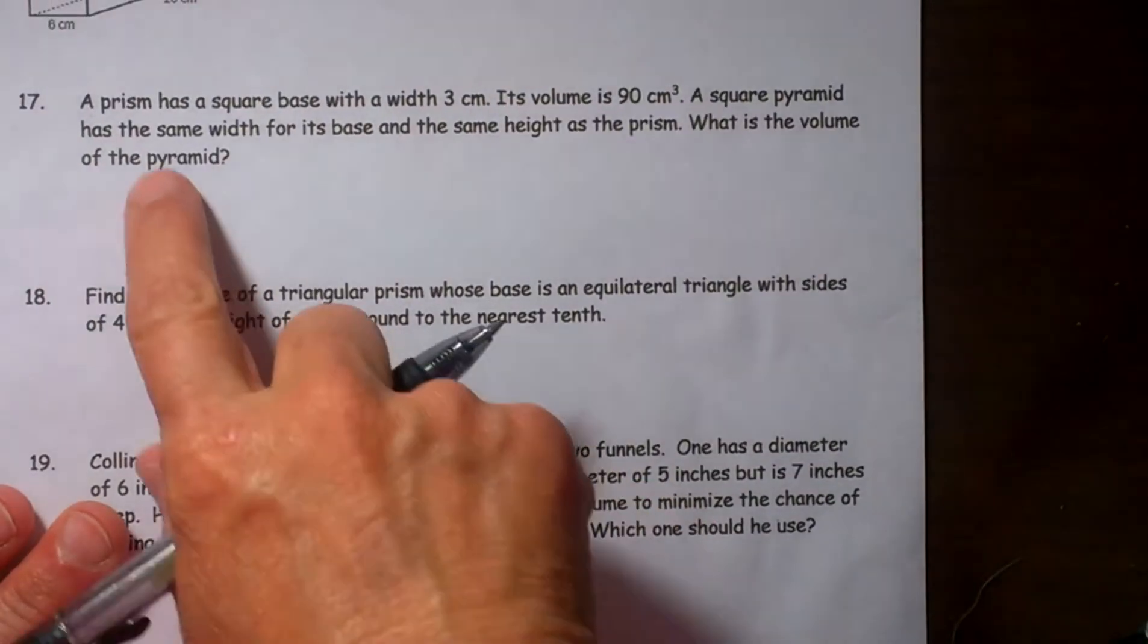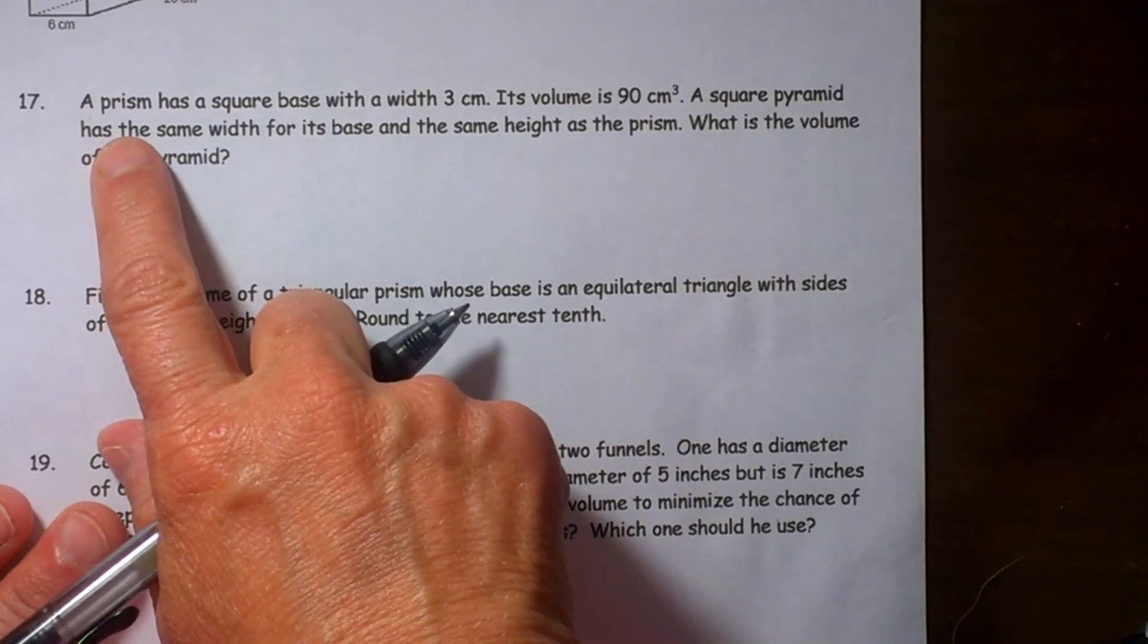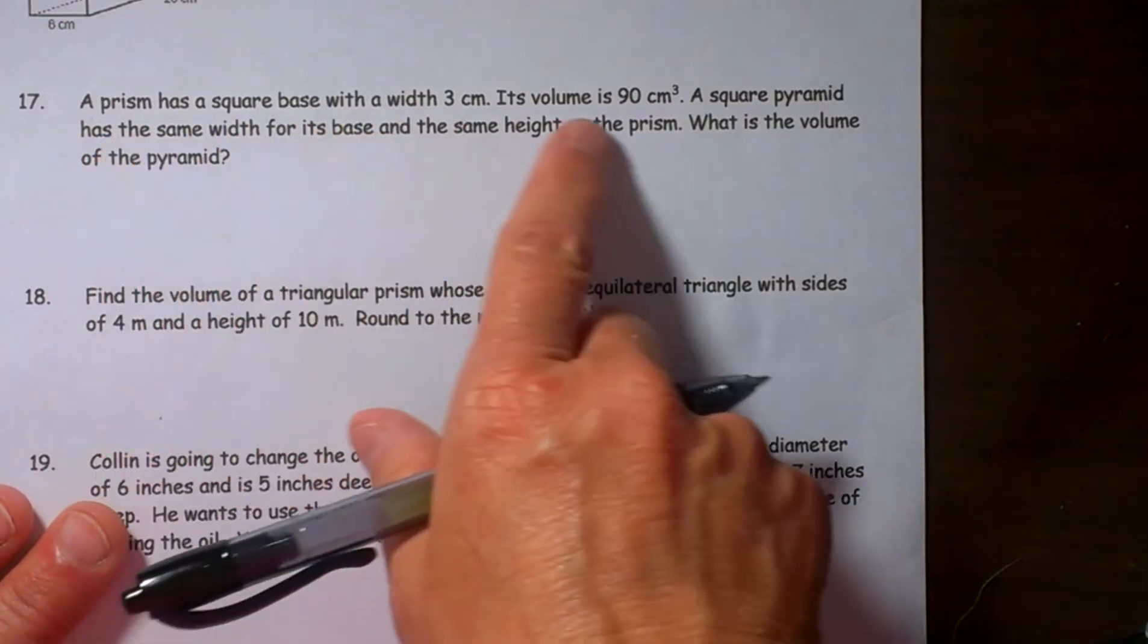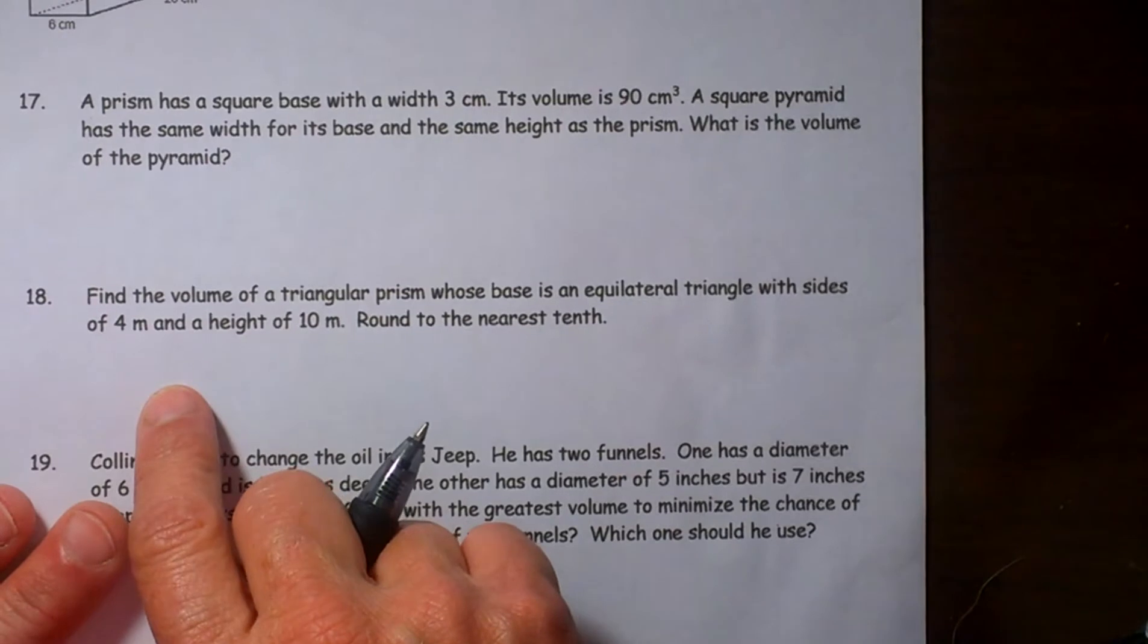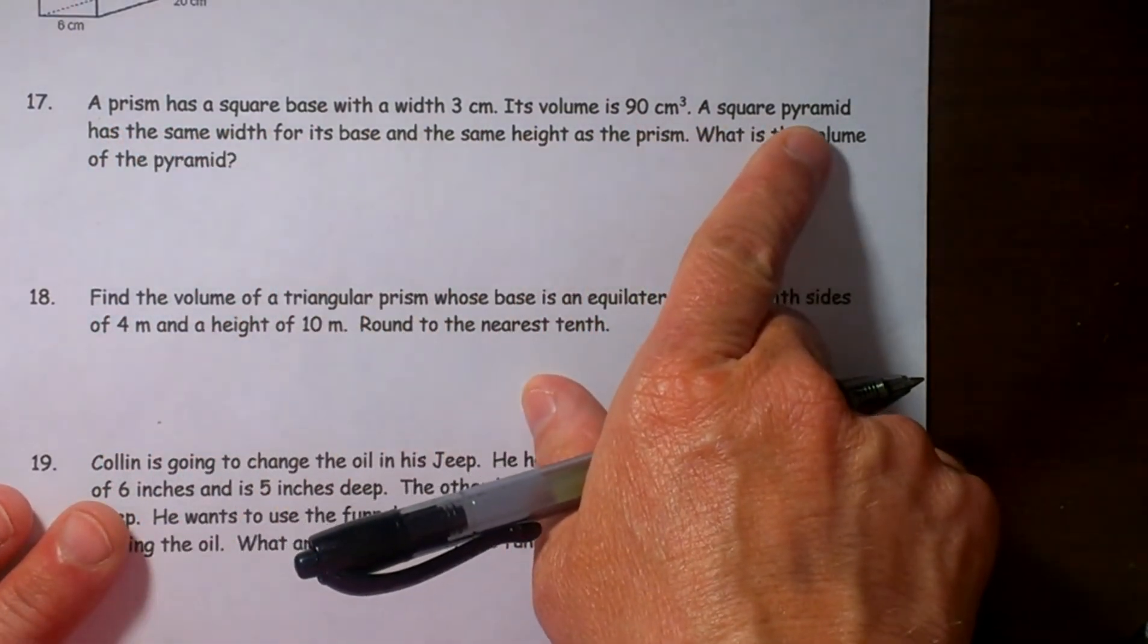Today we are going to look at how to find the volume of prisms and pyramids, cylinders and cones, and even spheres in word problems. So the first thing we want to do is read our word problem and try to draw a picture.